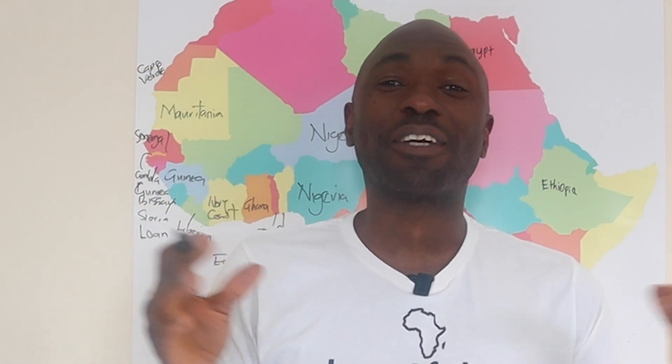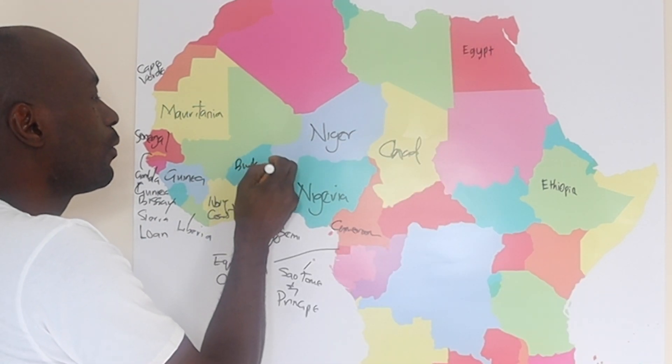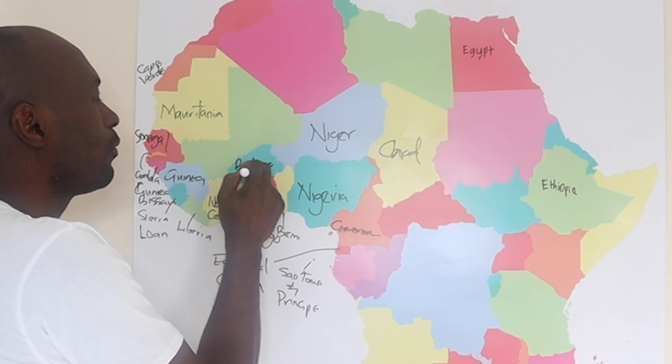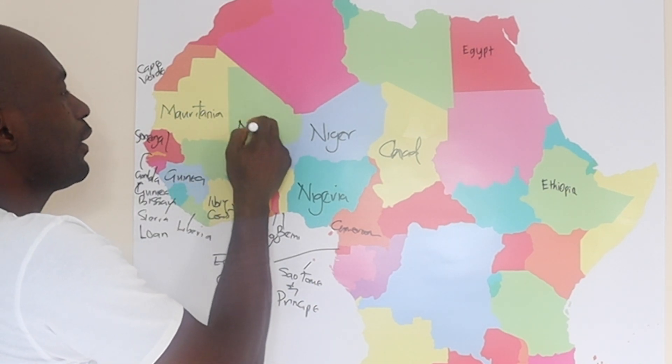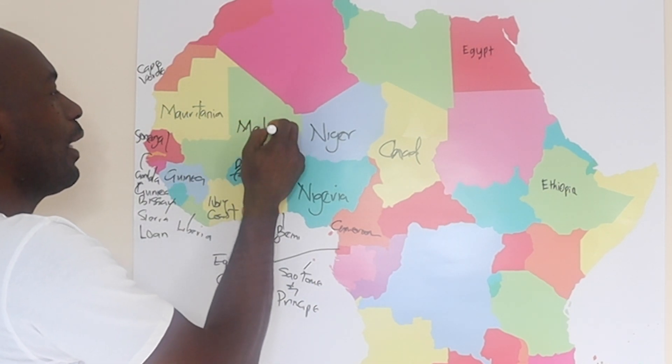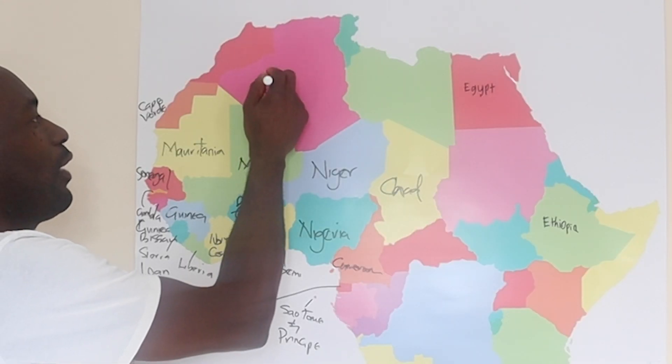There's a country in Africa that is not recognized as a proper country — it's like a disputed region. I'm going to mention that towards the end of the video. Burkina Faso. So Mali — the Great Mali Empire. And Algeria.